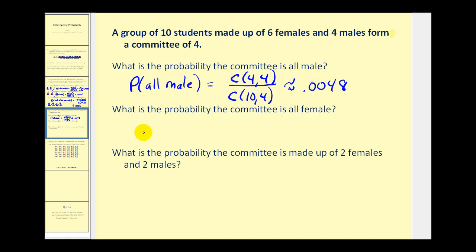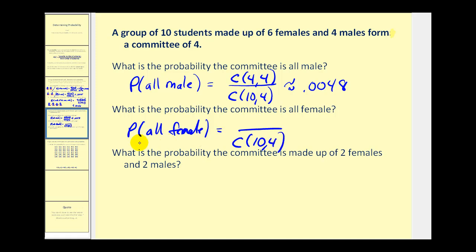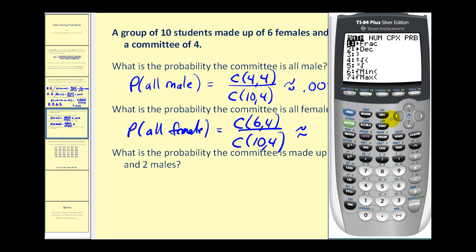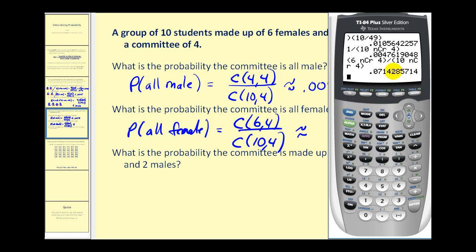Number two: what is the probability the committee will be all female? The denominator is still 10 choose 4. The favorable number of ways of selecting females — since there are six females — is 6 choose 4. So we have 6 choose 4 divided by 10 choose 4. It is higher because there are more females to select from. It's approximately 0.0714.